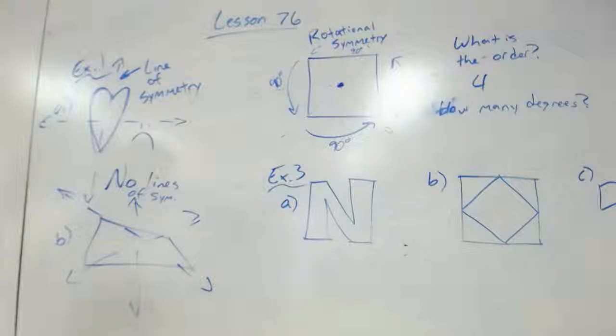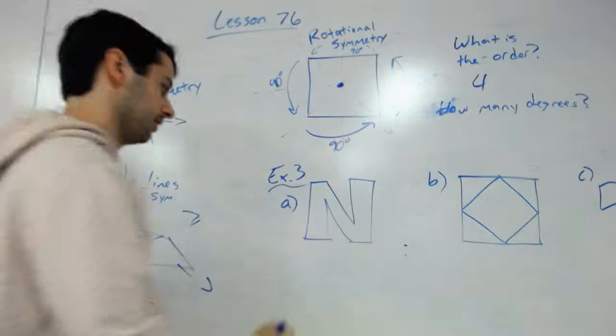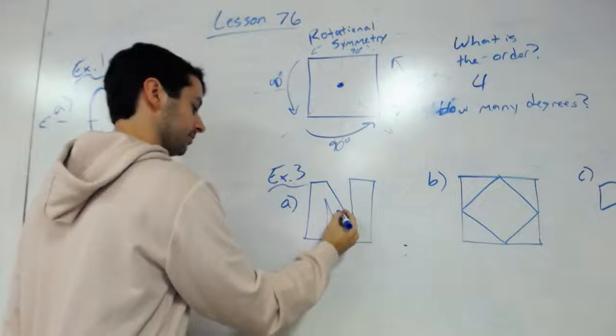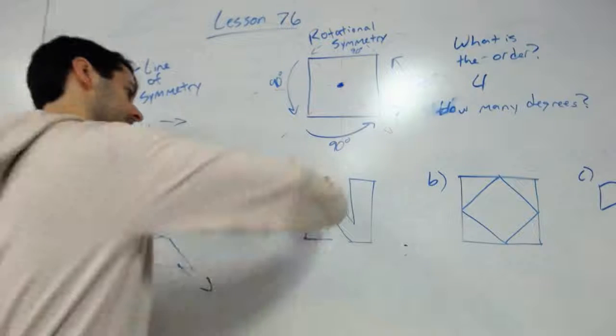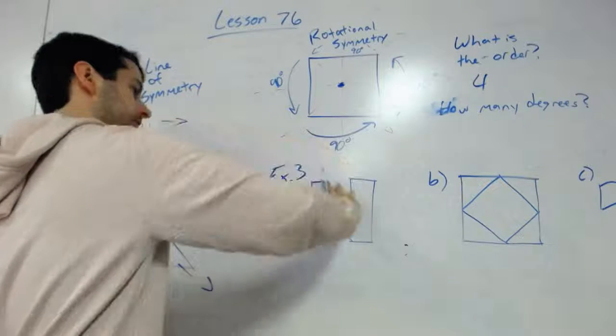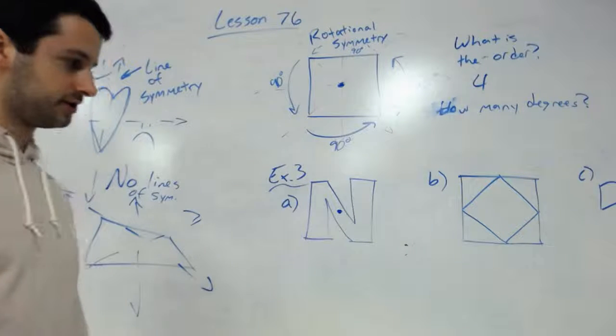So now let's look at some of those in example three. It wants to know if this shape here has any rotational symmetry. So I put a dot in the middle. Well if I turned it 90 degrees, that wouldn't work. But if I actually turned it 180 degrees, it would work.